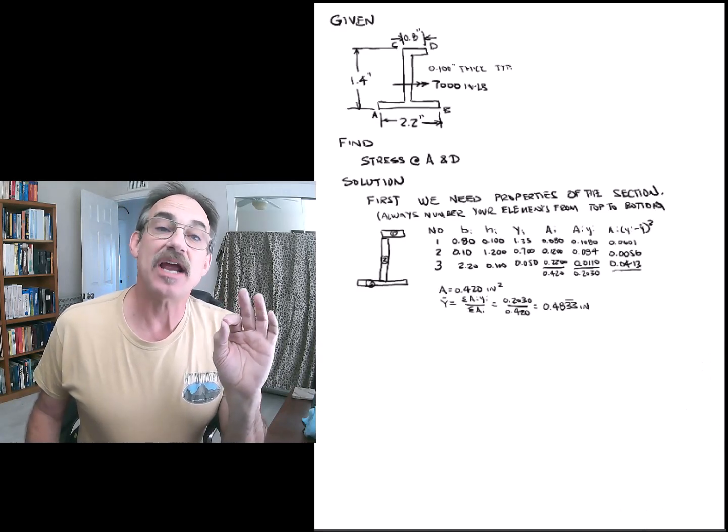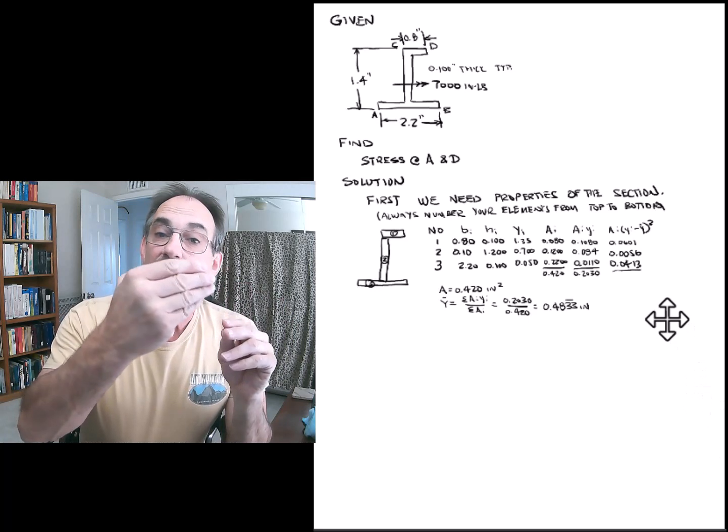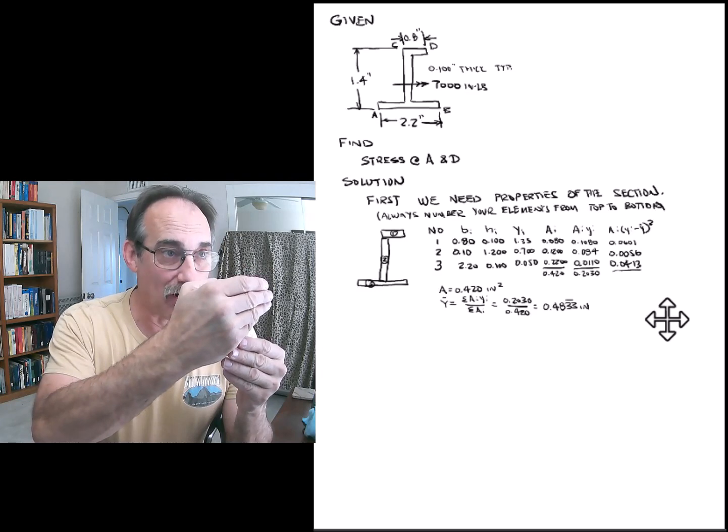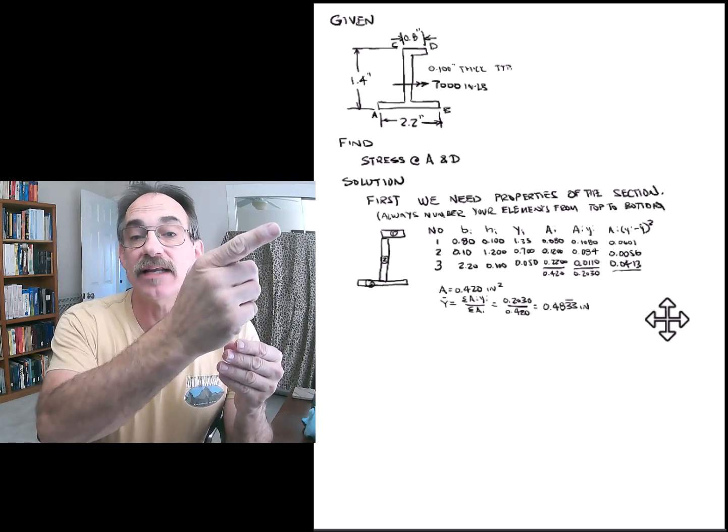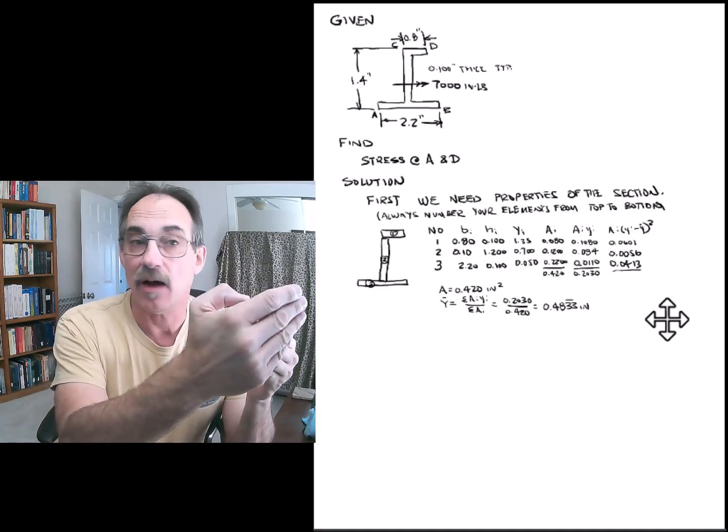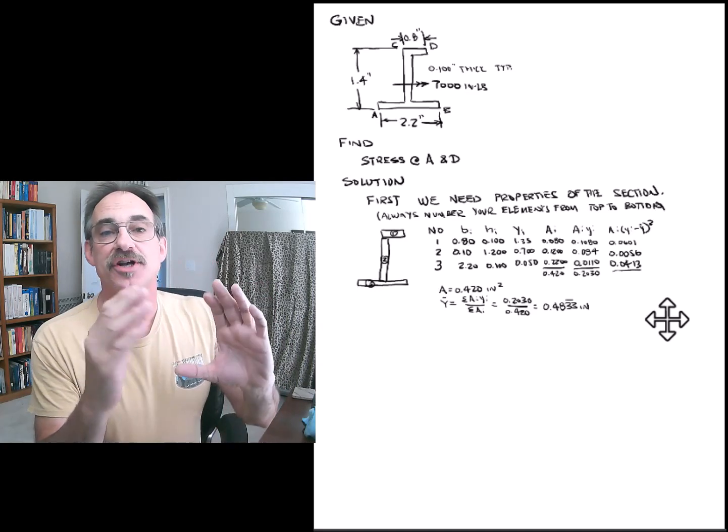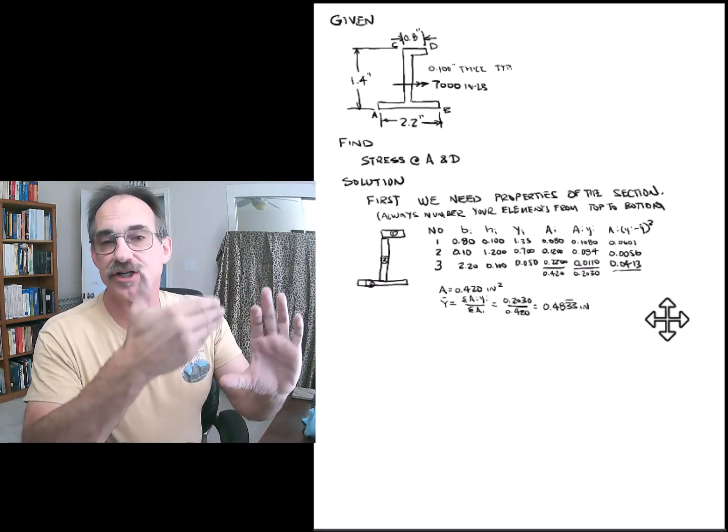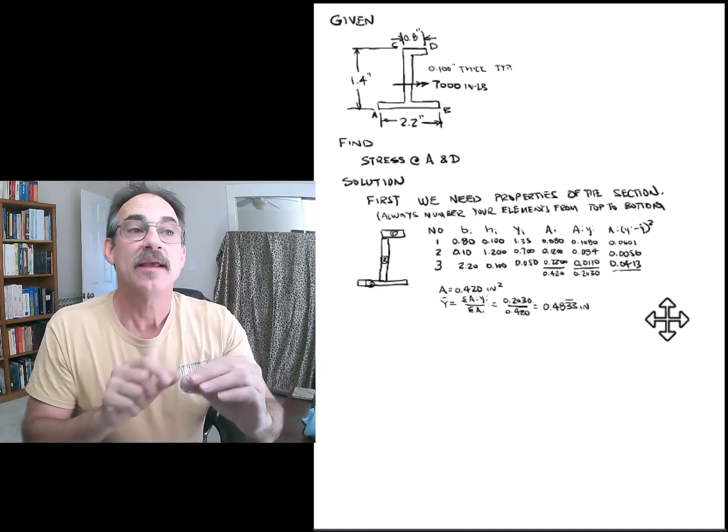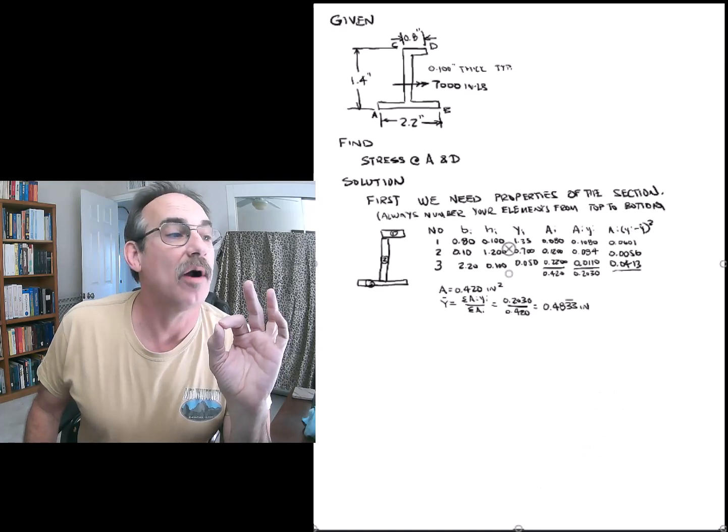Our next column takes each area and multiplies it. So for element 1, the area of element 1 times its Y bar, which is Y in our table for element 1, minus the Y bar of the section, which we see down below, and square that. That gives us how much moment of inertia is contributed by that little area not being at the centroid of the section. When we do that for each element, we sum those up, and that's part of our moment of inertia.